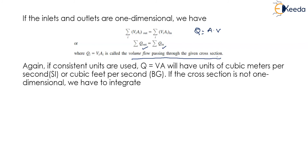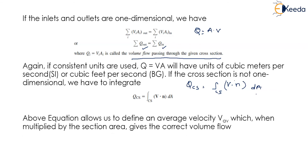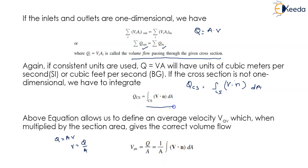If the cross section is not one-dimensional, we integrate the discharge through the cross section: Q_CS equals the integral of V dot N over the cross section. This allows us to define an average velocity V_av which, when multiplied by the section area, gives the correct volume flow — that is Q equals AV, so V_av equals Q upon A, which is 1/A times the integral of V dot N dA.